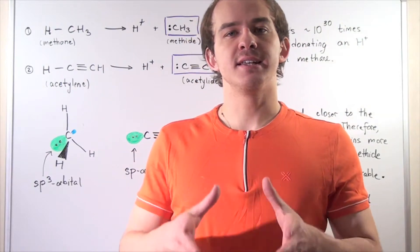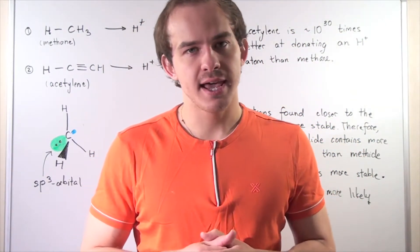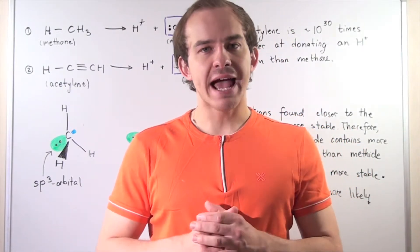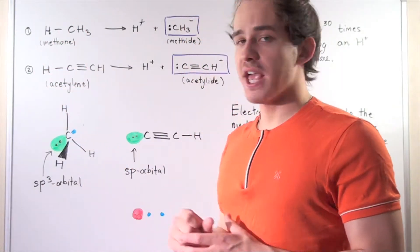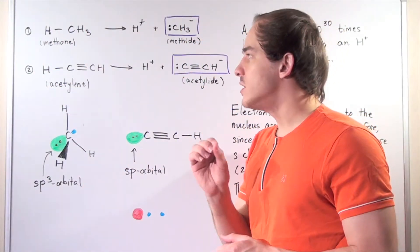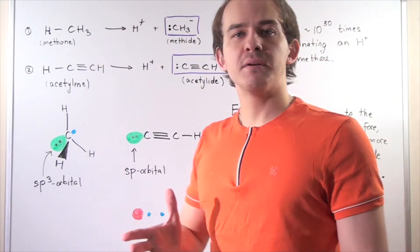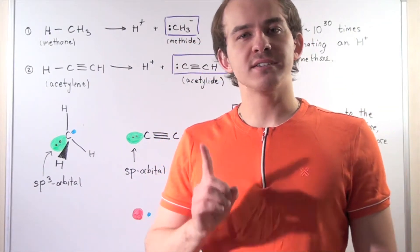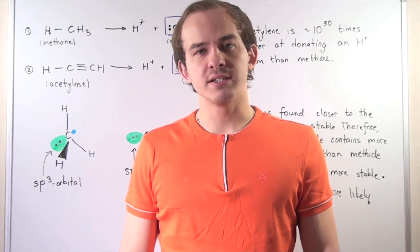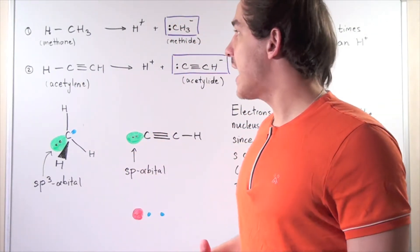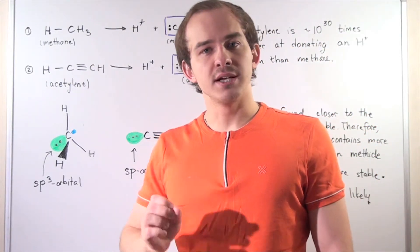Let's briefly discuss the acidity of alkynes and compare it to the acidity of alkanes. As an example, let's use the simplest alkyne, acetylene, and the simplest alkane, methane. We want to determine which one of these two hydrocarbon compounds is a better Brønsted-Lowry acid — a compound that is capable of donating an H⁺ ion.